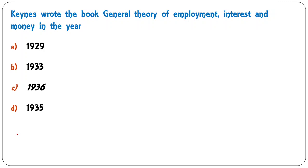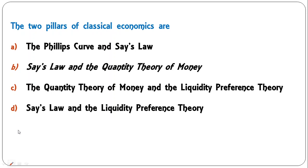Next question: Keynes wrote the book 'General Theory of Employment, Interest and Money' in which year — 1929, 1933, 1936, or 1935? This is a memory-based question. Keynes wrote the book in 1936. So C is the correct answer.